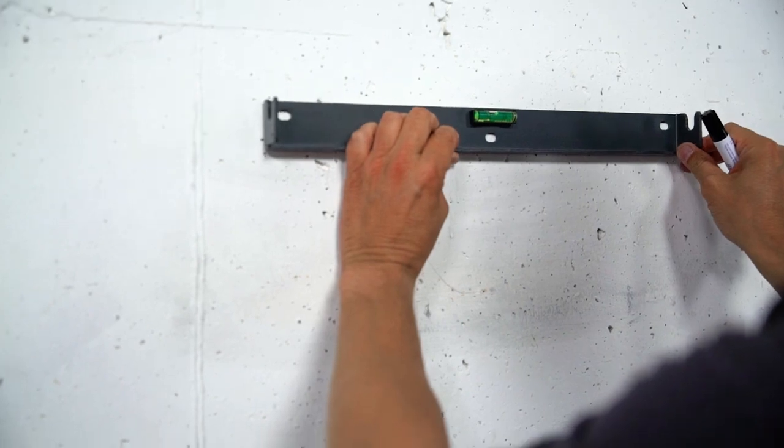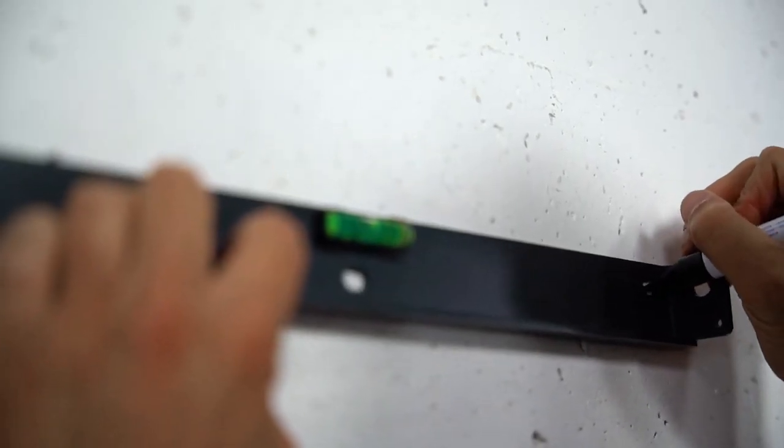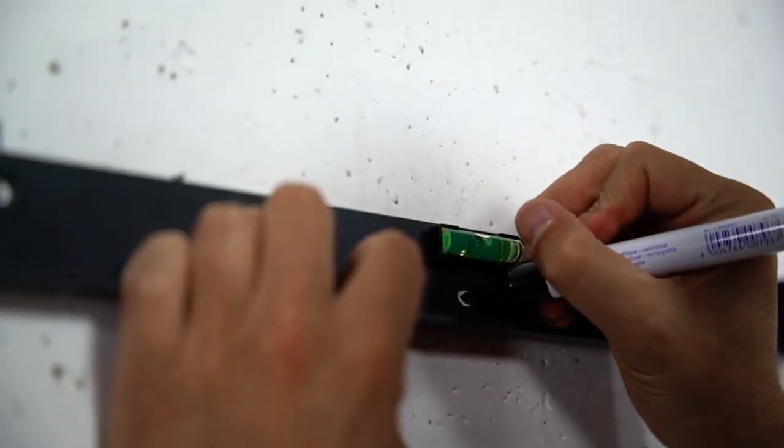Luckily you don't need a spirit level. SunGrow has it integrated in the mounting plate. Before you start drilling, you should make sure that there are no wires running through the wall that you could damage.